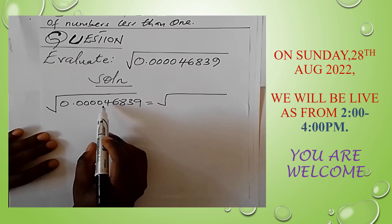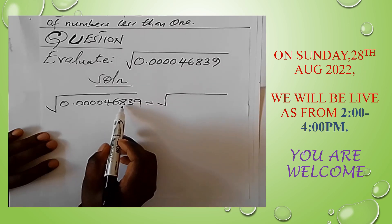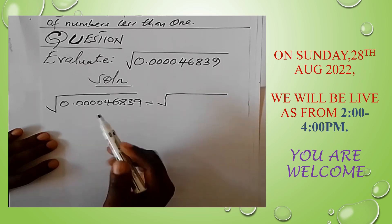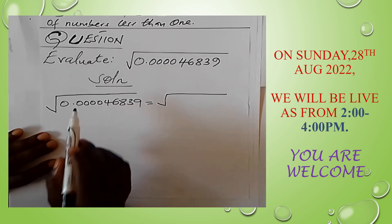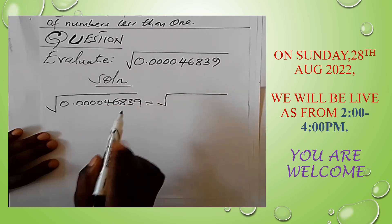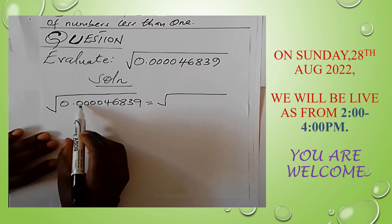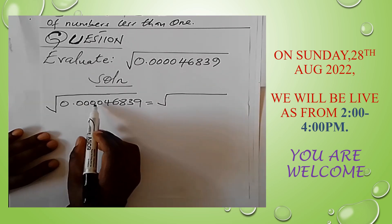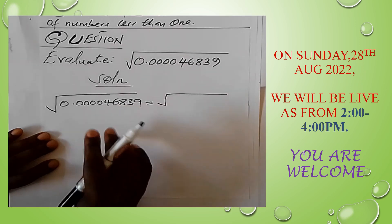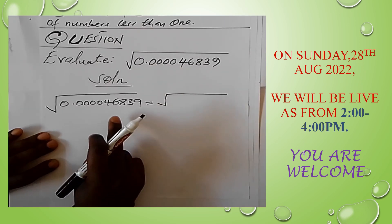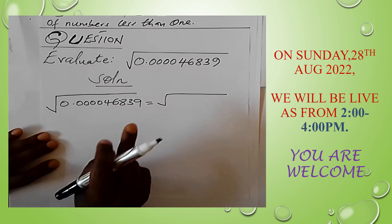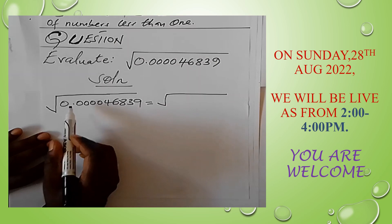You can write it as 4.6839 times 10 to a power. The power is the number of steps you move the decimal. In this case, for the decimal to be at 4, you would have moved 5 steps: 1, 2, 3, 4, 5. So in standard form this number would be 4.6839 times 10 to the power minus 5.